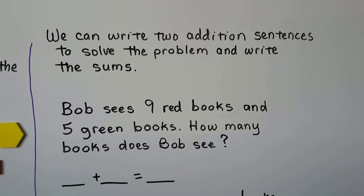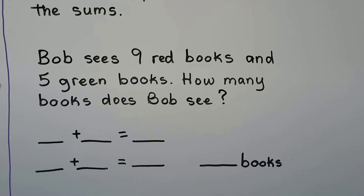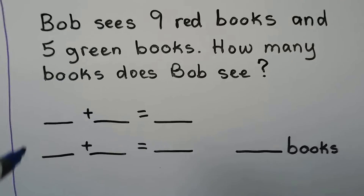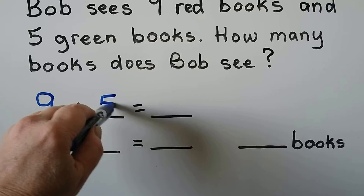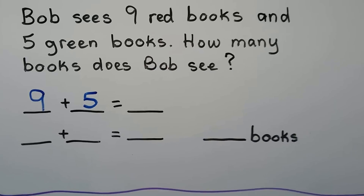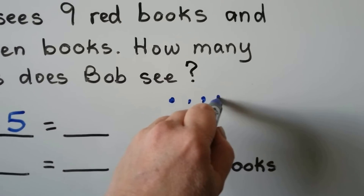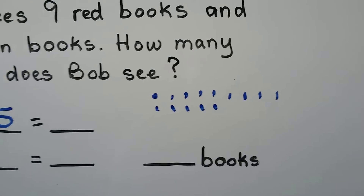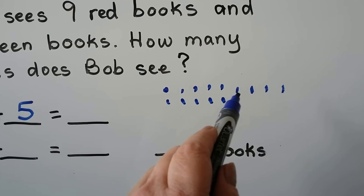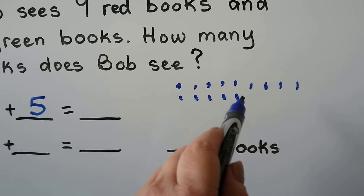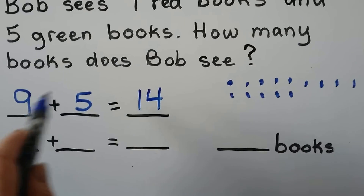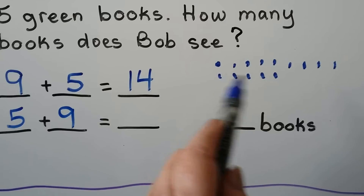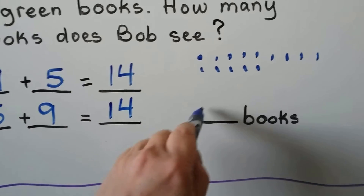We can write 2 addition sentences to solve the problem and write the sums. Bob sees 9 red books and 5 green books. How many books does Bob see? We can use counters to help us — 1, 2, 3, 4, 5, 6, 7, 8, 9 plus the 5 green ones — 1, 2, 3, 4, 5, 6, 7, 8, 9, 10, 11, 12, 13, 14. That's 14. We can change the order of the addends and put the 5 here and the 9 here. We haven't added or taken away any counters. It's still 14. Bob sees 14 books.